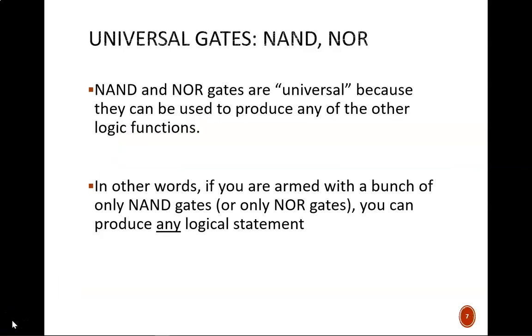NAND and NOR are known as universal gates. This is because, on their own, they can produce any of the other logic operations. This means that if all you had were many, many NAND chips, you could build circuits to represent any logic statement.